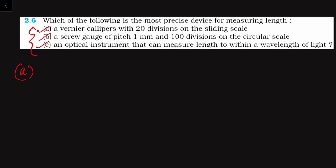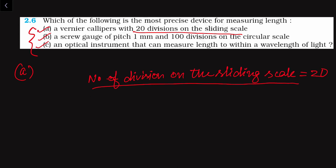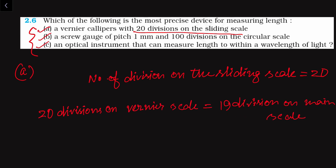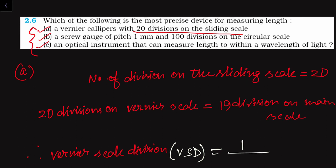In the first case we are given a vernier scale. The total number of divisions on the sliding scale is 20. So 20 divisions on the vernier scale is equal to 19 divisions on the main scale. Therefore, one vernier scale division (VSD) is equal to 19 divided by 20 main scale divisions.